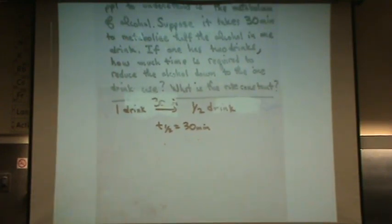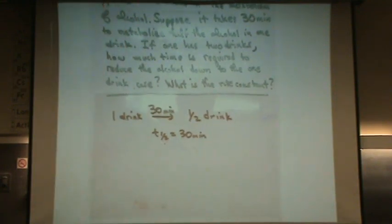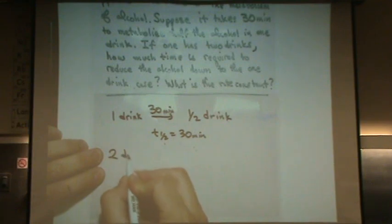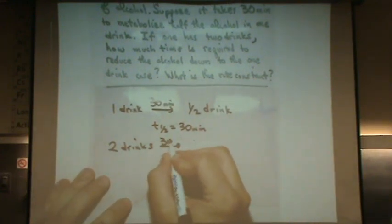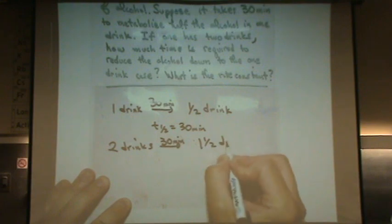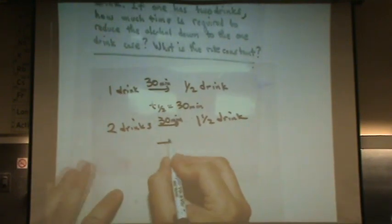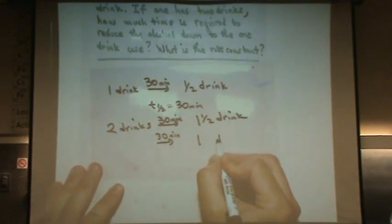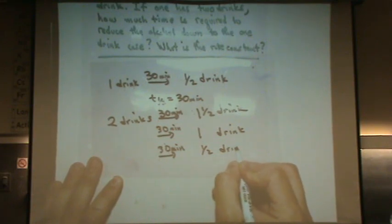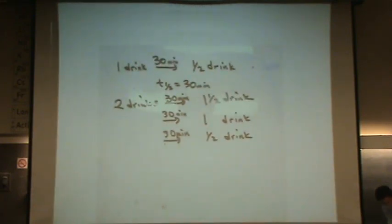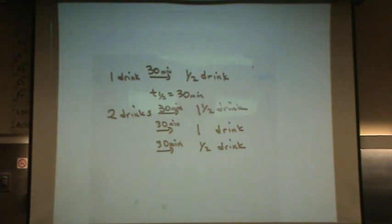People on MTV — not you, I'm sure. If you take two drinks, notice what's going to happen. After 30 minutes, you're down to only a drink and a half. After another 30 minutes, you're down to one drink in your system. And after another 30 minutes, you're down to half a drink. So once you have that second drink, it now takes an hour and a half to get down to where you would have been if you only had one drink.